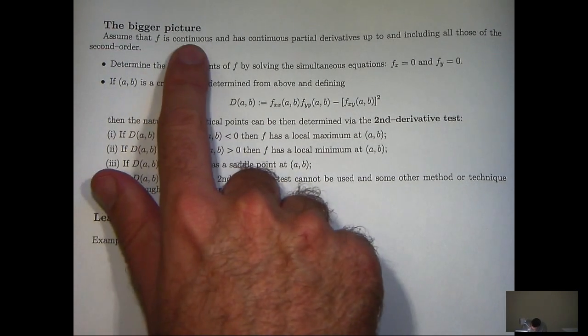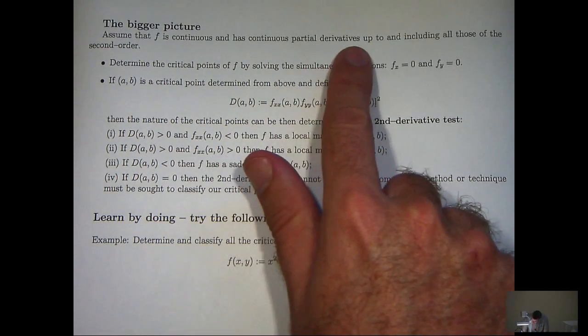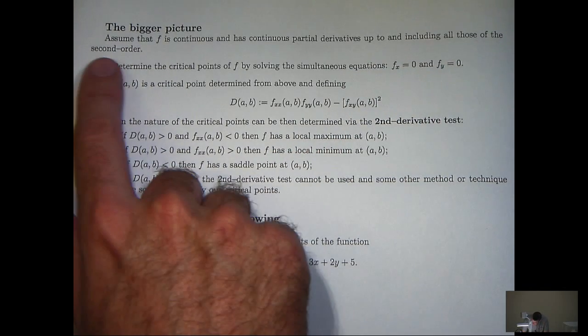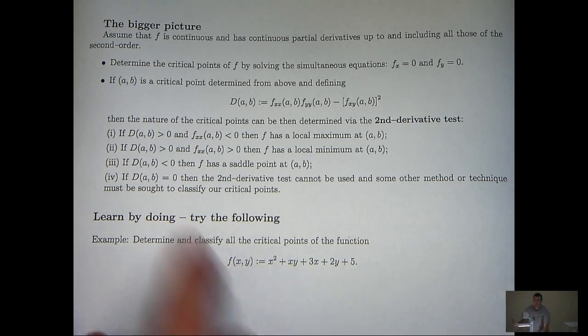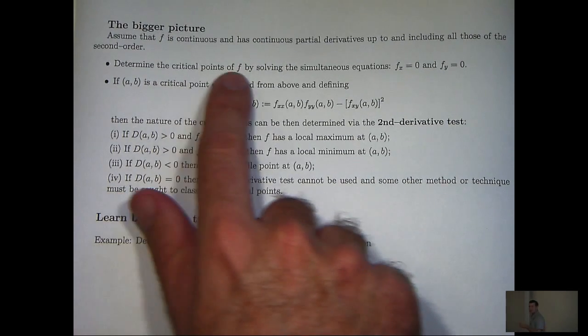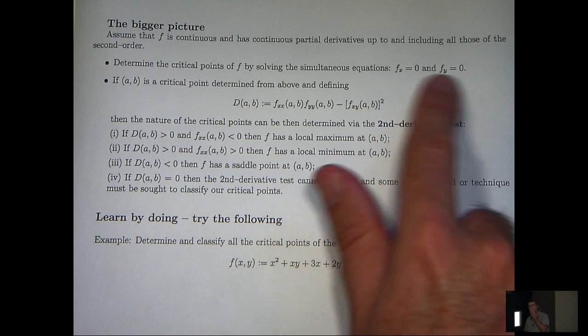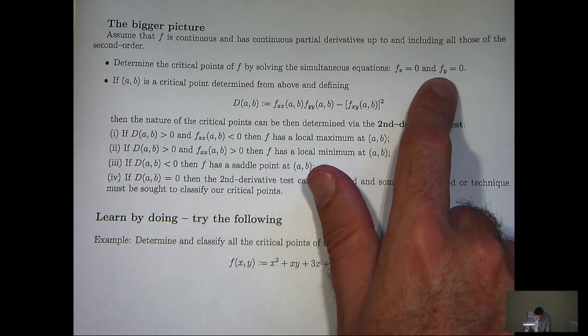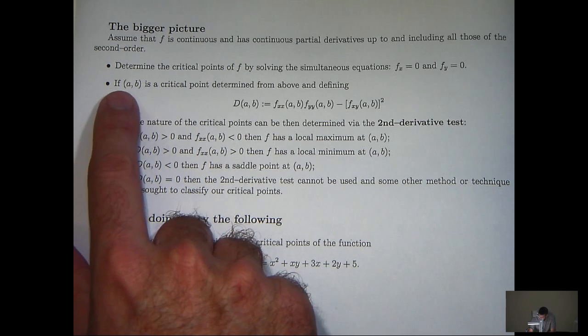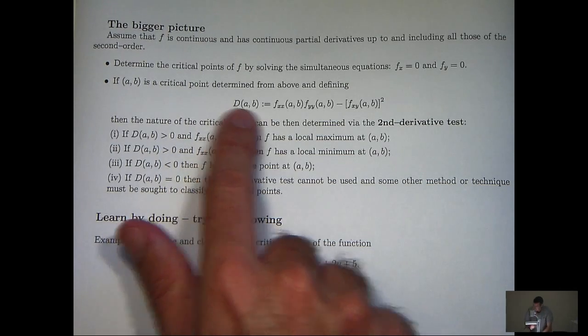Assume that f is continuous and has continuous partial derivatives up to and including all those of the second order. This assumption was automatically satisfied by the example we looked at because it was a polynomial. Determine the critical points of f by solving these simultaneous equations involving f sub x and f sub y. Once we've located our critical point, if we define d in the following way, then the nature of the critical point can be determined by the second derivative test.